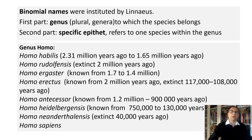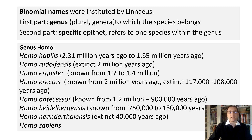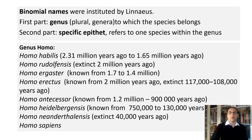Here they are: Homo habilis, Homo rudolfensis, Homo ergaster, Homo erectus, Homo antecessor, Homo heidelbergensis, Homo neanderthalensis, and Homo sapiens.